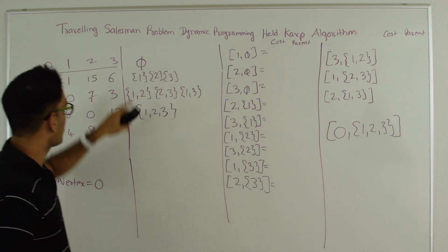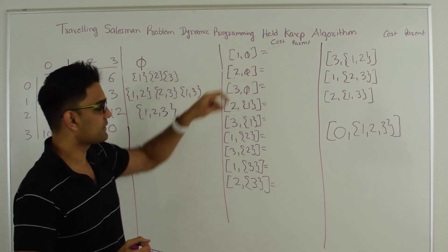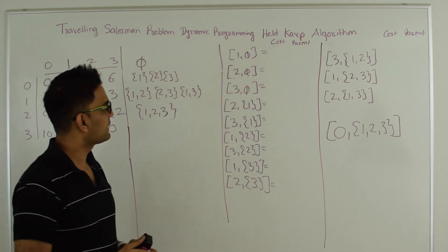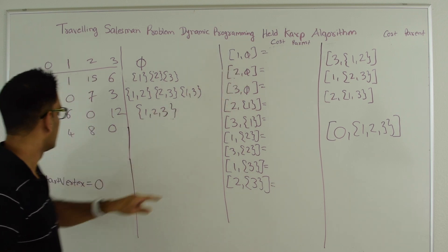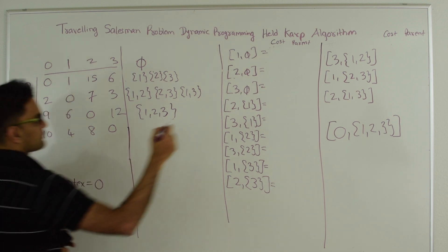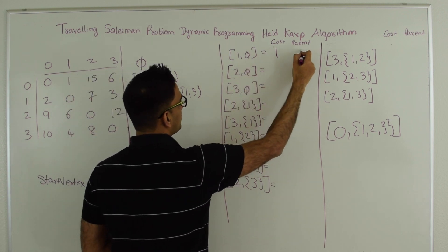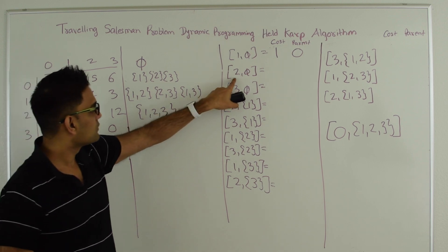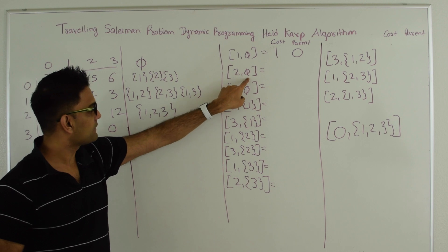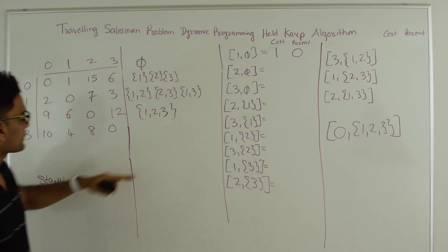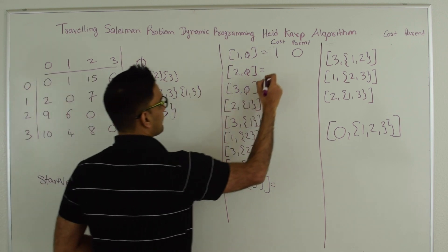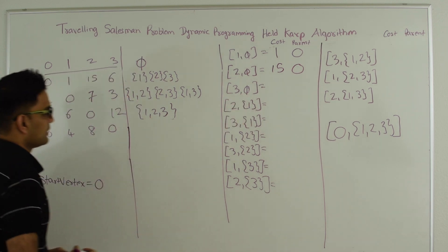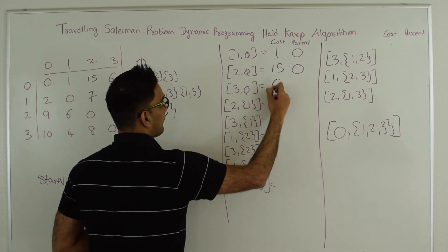First we pick the empty set. We find the minimum cost to reach vertex 1 from start vertex 0 going via the empty set — since there are no vertices in the empty set, this is just the cost of 0 to 1, which is 1, and we indicate that we're reaching 1 from 0. Similarly, the cost to reach 2 from 0 is 50, and to reach 3 from 0 is 6, both with parent 0.